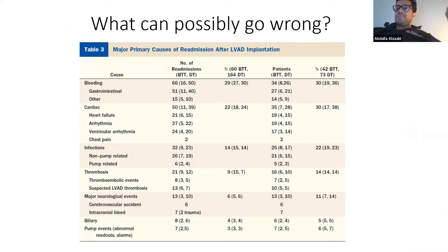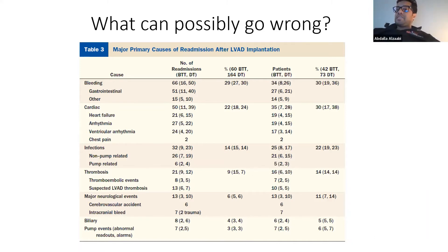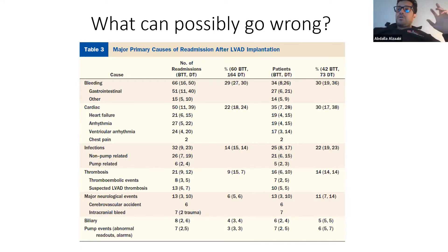When you go in, form a differential diagnosis for why the patient is in the ED. Here is a table showing the most common presentations. These patients are high risk for bleeding, especially GI bleed. They have a high risk of cardiac complications — they may still be in heart failure or having an exacerbation despite having an LVAD. They might have atrial or ventricular arrhythmias, chest pain, infection related or unrelated to the LVAD, thrombosis of the LVAD, stroke, intracranial hemorrhage, or a problem with the machine itself, such as an alarm.